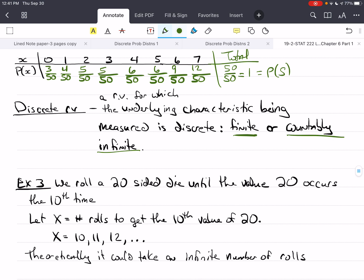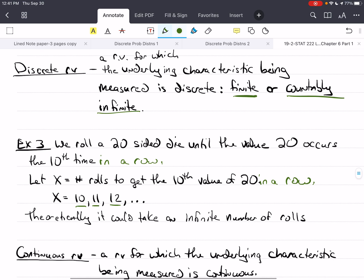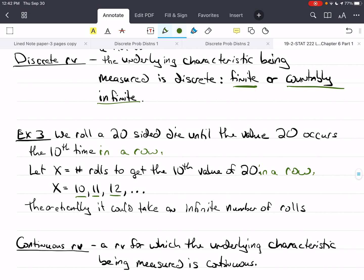We have a 20-sided die, and we're going to roll it until we get a 20 ten times in a row. I'm going to make this difficult to get. Let X equal the number of rolls to get the 10th value of 20 in a row. The values X can take has to be 10. We can't get 10 rolls of 20 in less than 10 rolls. So we start at 10, then 11, then 12, and so forth. This is such a difficult feat that we could go on and on and not get this. Theoretically, it could take an infinite number of rolls to obtain 10 in a row that were 20. That's an example of a countably infinite random variable. We can count at 10, 11, 12, 13, 14. We can keep counting, but it could keep going on forever before we got there.